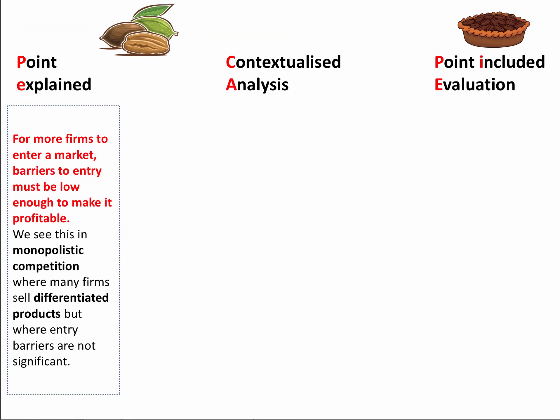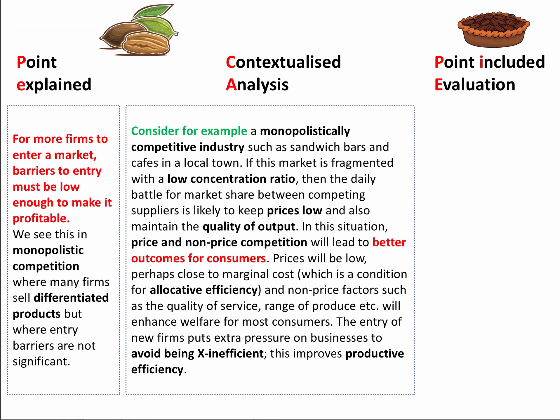Here's my first point: for more firms to enter a market, barriers to entry must be low enough to make it profitable. We see this in monopolistic competition, where many firms sell differentiated products but where entry barriers are not significant. I'm starting off by looking at the impact of new firms in a market. Then build the contextualised analysis — consider, for example, a monopolistically competitive industry such as sandwich bars and cafes in local towns. Straight away, we're providing some context.